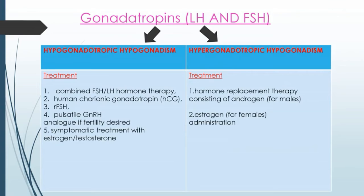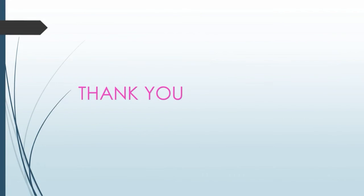Treatment of hypogonadotrophic hypogonadism includes combined FSH and LH hormone therapy, hCG, recombinant FSH, and pulsatile GnRH analog when fertility is desired, as well as symptomatic treatment with estrogen or testosterone. In males, hormone replacement therapy consists of androgens; for females, estrogen is used.